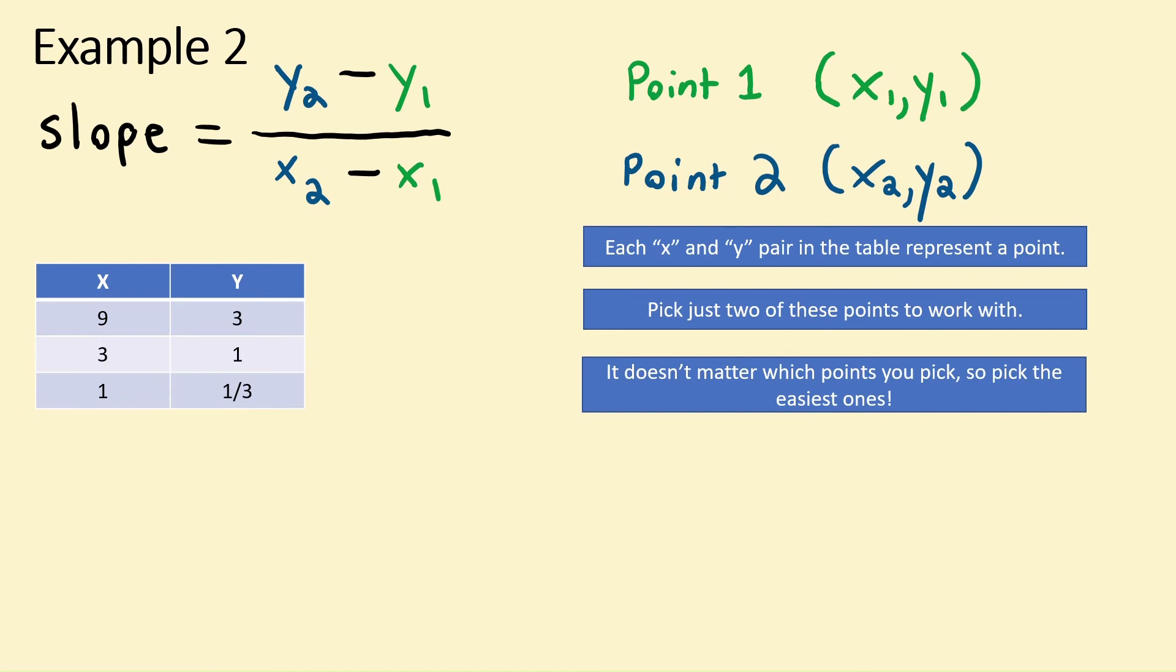Fractions aren't really anyone's favorite thing, so let's avoid the last point and use the first two ones. It also doesn't matter what order you pick the points in. We can go ahead and pick the middle point to be point 1 and the topmost point to be point 2.